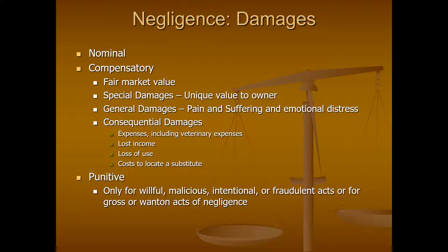General damages include claims for pain and suffering and emotional distress. The courts are very clear that there is no recovery for the pain, suffering, and emotional distress of the animal, and there is no recovery for the owner's pain, suffering, and emotional distress. Consequential damages include things like veterinary expenses if an animal is injured, lost income if the animal was a source of income — for example, if the animal worked in a petting zoo — and the cost to locate a substitute animal, which is usually nominal unless the animal has special training like a seeing-eye dog.